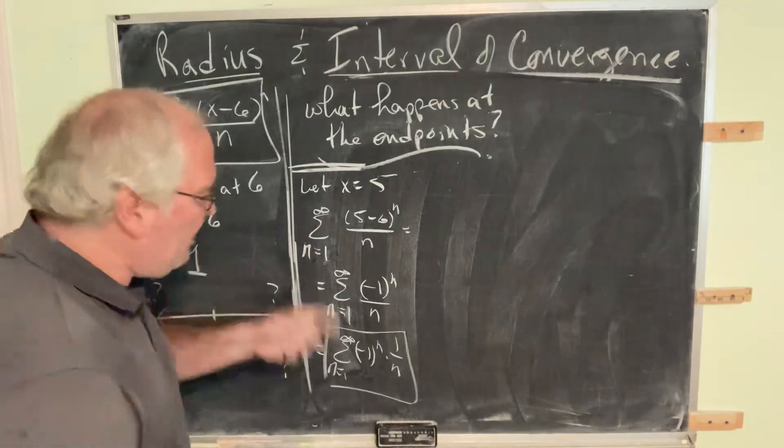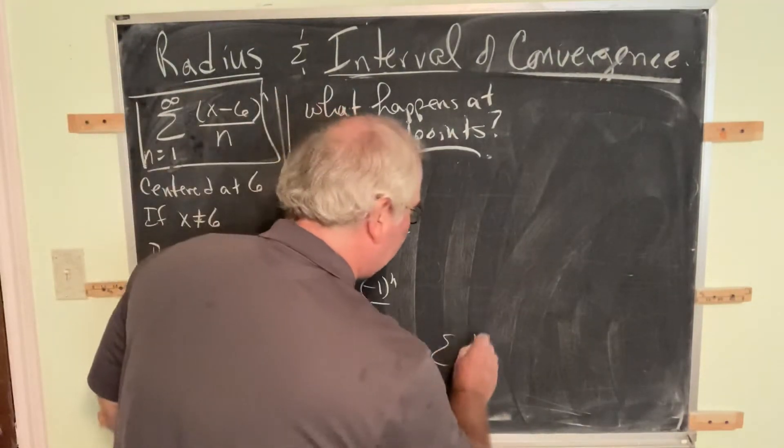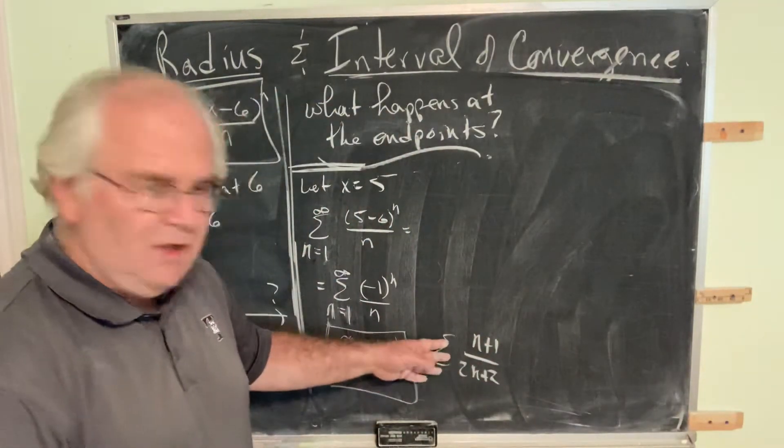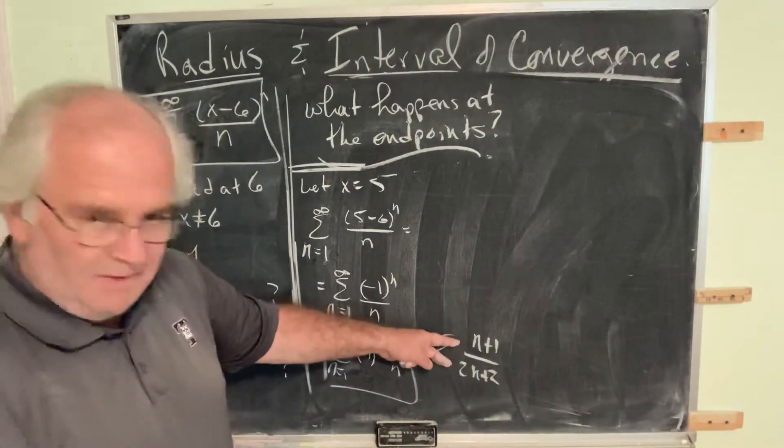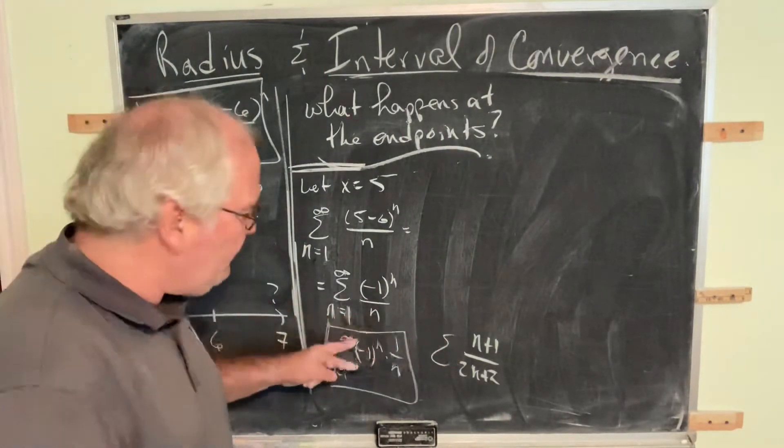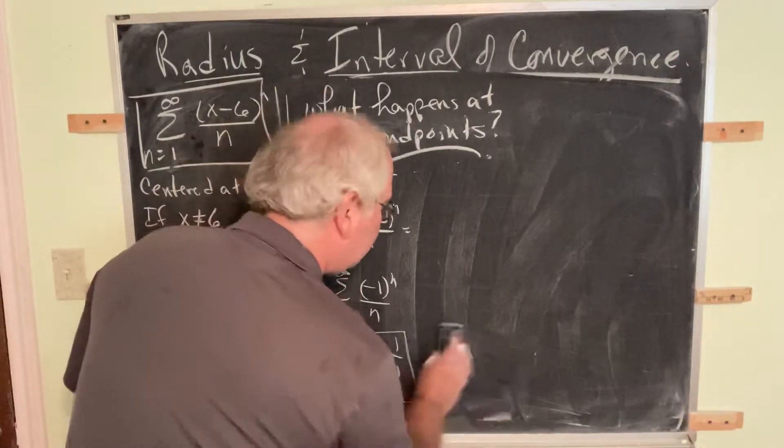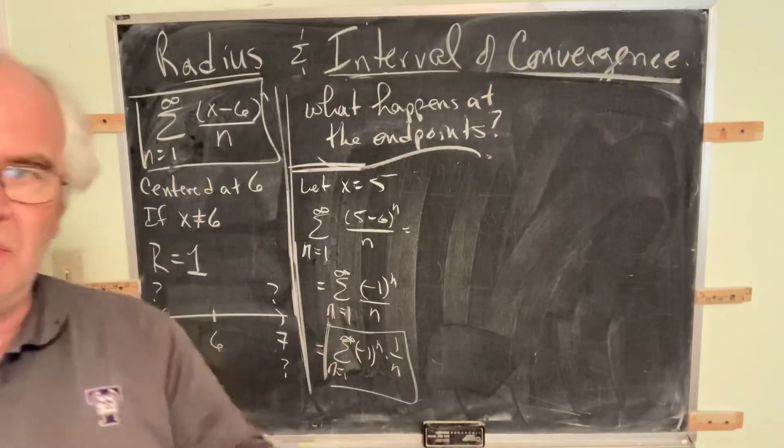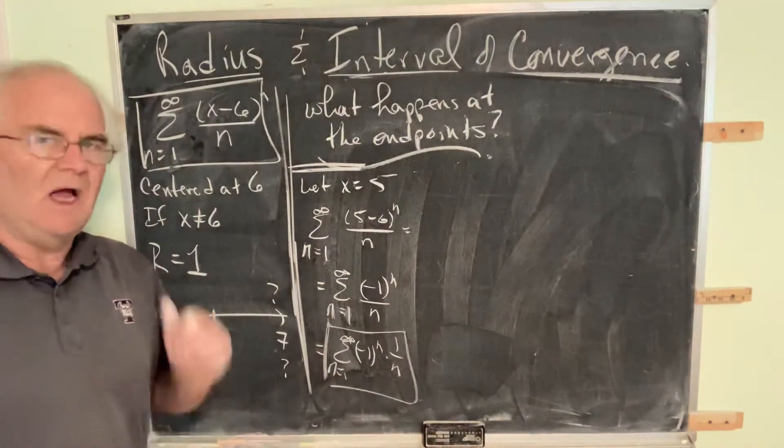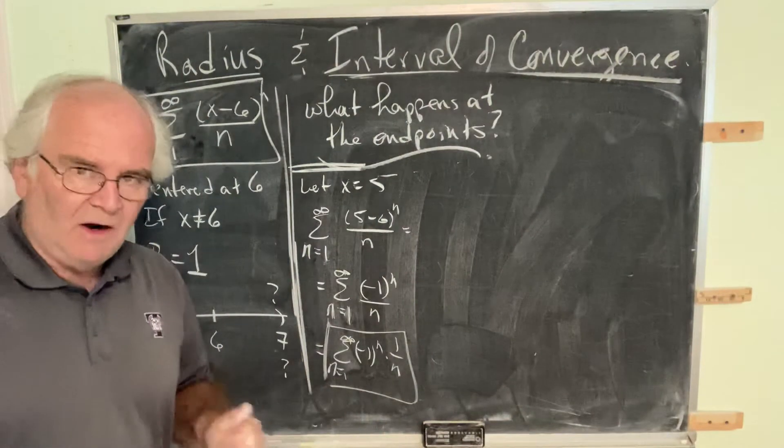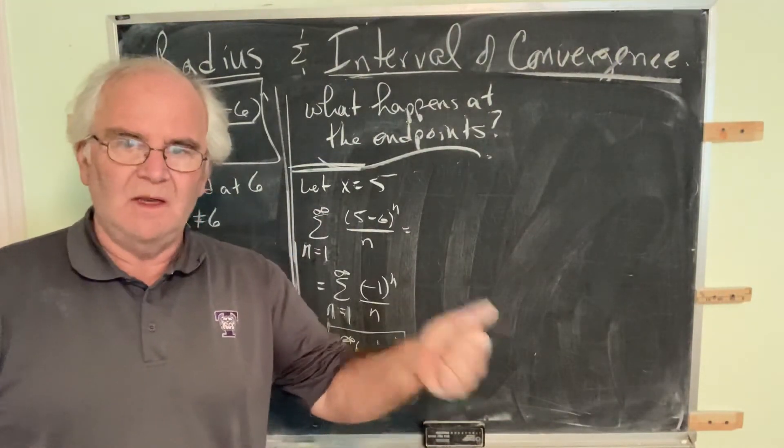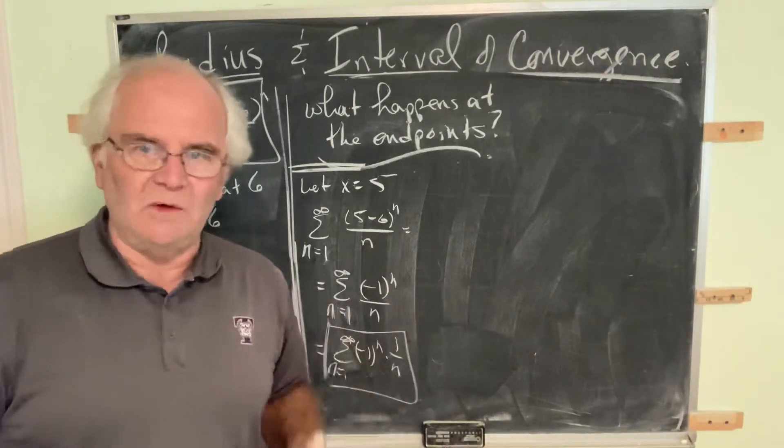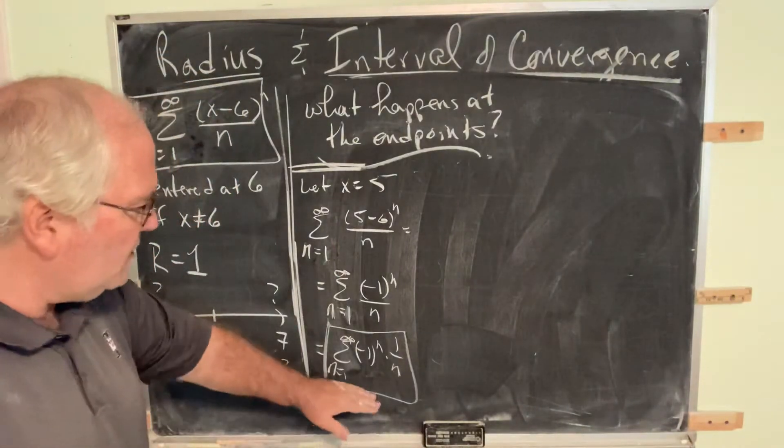If you get something else when you substitute in, suppose you get something like (n+1)/(2n+2), maybe that's what you get. Well, then you don't use the alternating series test. You use the limit comparison test. So whatever you inherit from substituting in this endpoint, you check to see if that series converges using your vast knowledge of convergence of series. Almost always for our work, it's either going to be alternating series or limit comparison test.